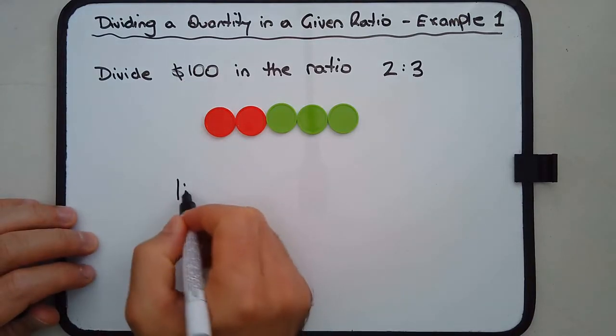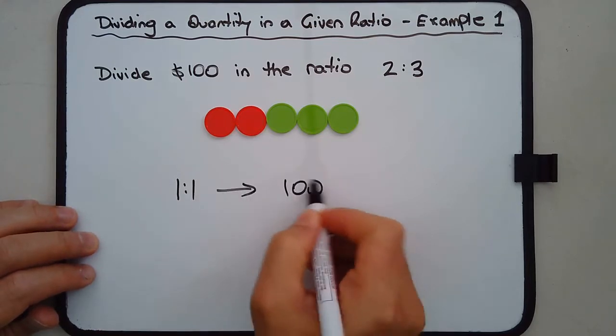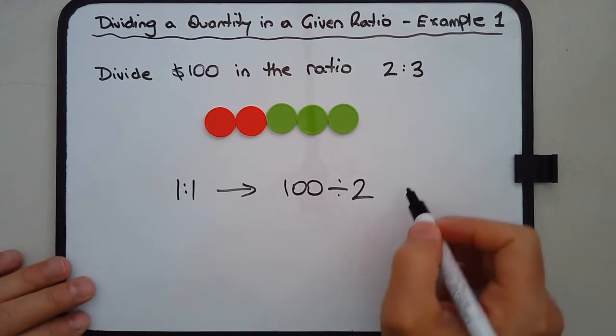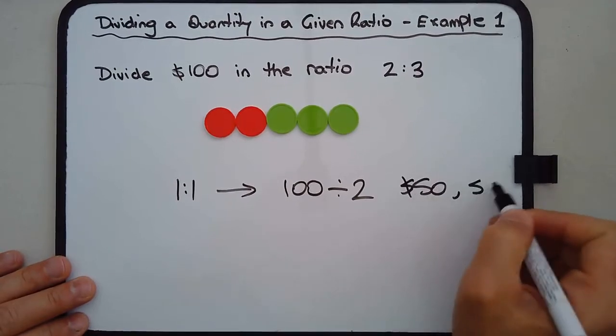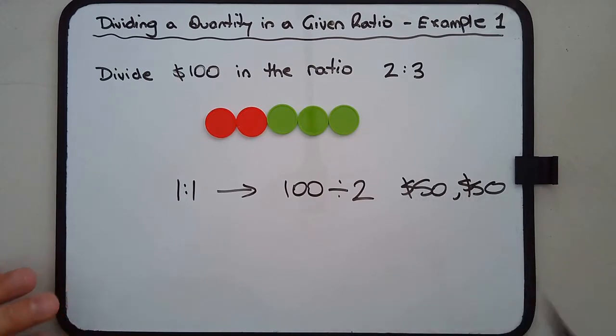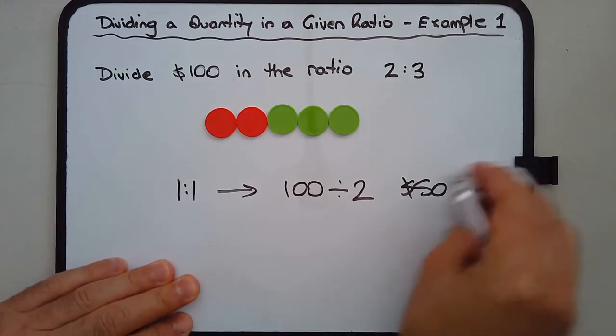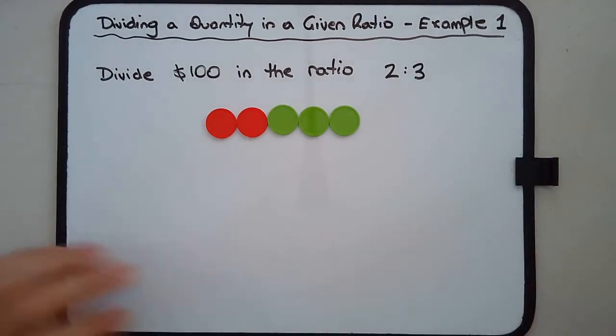If we divided $100 in the ratio 1 to 1, what does that really mean? This really means $100 divided by 2, which is $50 and $50. So two groups, each group being $50 even. This time around though we're going to divide the $100 a little bit differently, where one group is in fact slightly bigger than another.